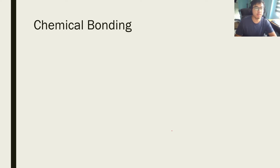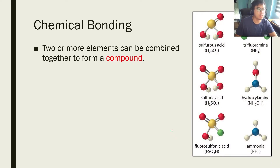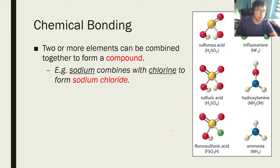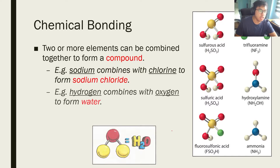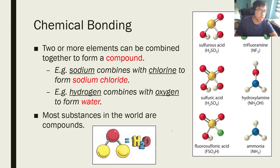First, chemical bonding: two or more elements can be combined together to form a compound. For example, sodium combines with chlorine to form sodium chloride. Hydrogen combines with oxygen to form water. These are what we call compounds. Most substances in the world are compounds.